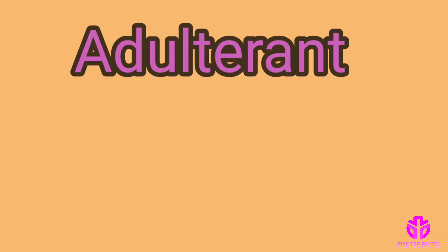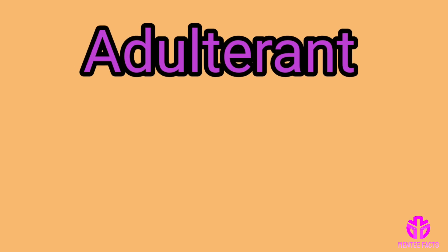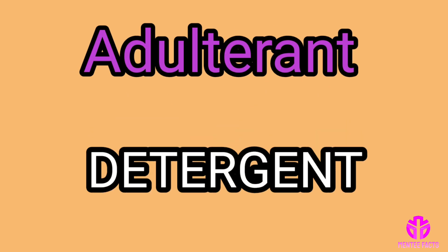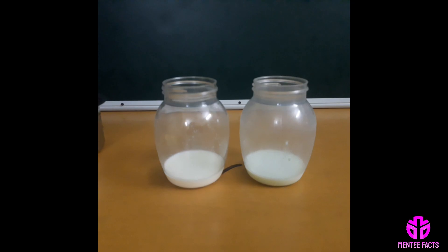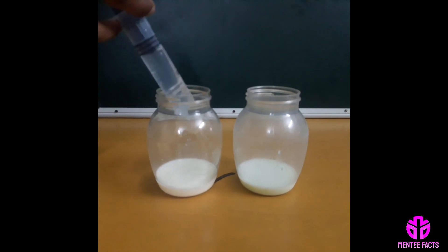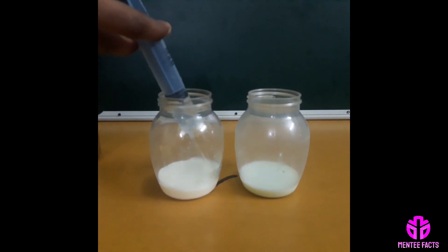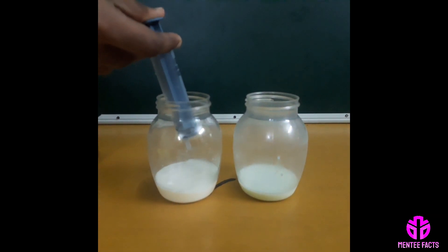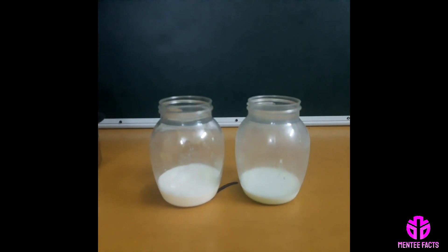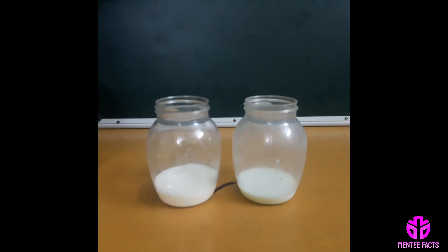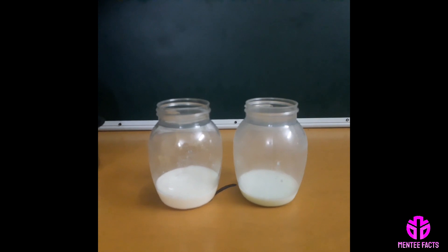The next adulterant in milk is detergent. Mix about 20 ml of milk with an equal quantity of water.